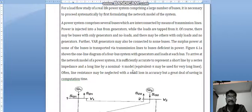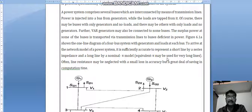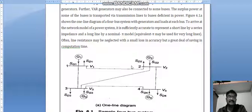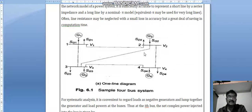To arrive at the network model of a power system, it is sufficiently accurate to represent short line by a series impedance along the line by nominal pi method. Equivalent pi may be used for very long lines. Often line resistance may be neglected with small loss in accuracy but great deal of saving in computation time.